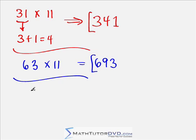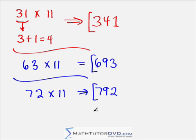What if you had 72 times 11? 7 plus 2 again is 9. So we take the first digit here. We put the 9 that we get from adding these together in the middle. And then we keep our last digit 2, 792.